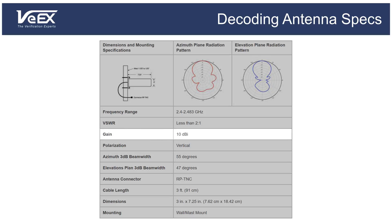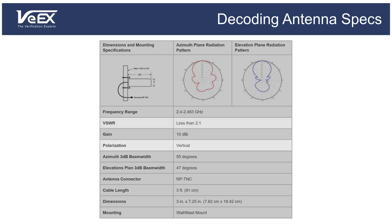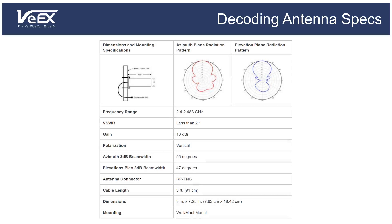A gain of 10 dBi means that it provides a power gain of 10 times that of an isotropic antenna. Its polarization is vertical, which means that if you're deploying a point-to-point link, you have to make sure that the antenna polarities at each end of the link match. Finally, the VSWR is 2 to 1, which results in an 11% loss — within normal range for a Wi-Fi antenna.